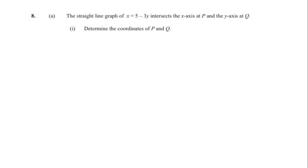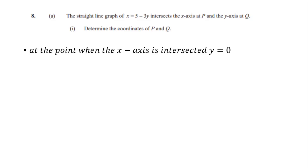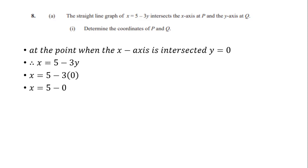On the x-axis where the straight line intersects to form P, we know that when the x-axis is intersected y is equal to 0. So all along that line y = 0, therefore in x = 5 − 3y we substitute y for 0. It will be x = 5 − 3 × 0, and we solve to get x = 5 − 0 = 5.